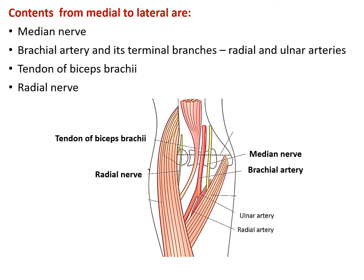The contents of cubital fossa, from medial to lateral, are: the most medial structure is the median nerve, next to that is the brachial artery which divides into the ulnar artery and the radial artery, the third structure is the tendon of biceps brachii, and the fourth and most lateral structure is the radial nerve, which divides into superficial and deep branches.